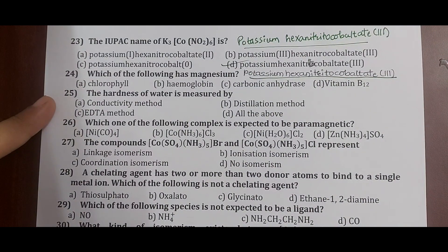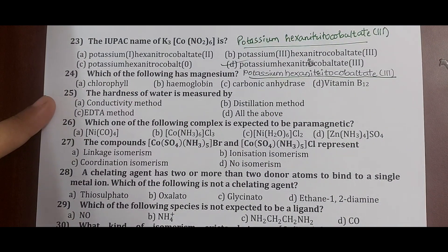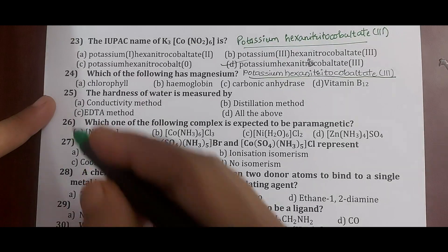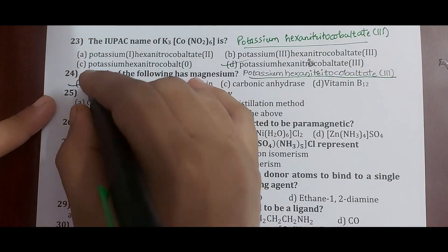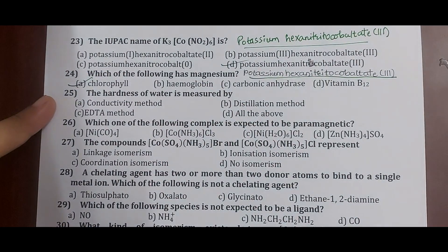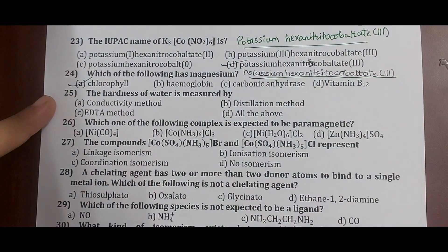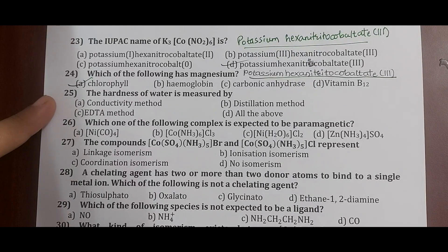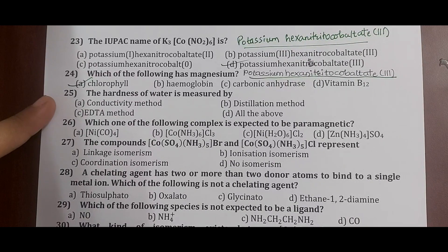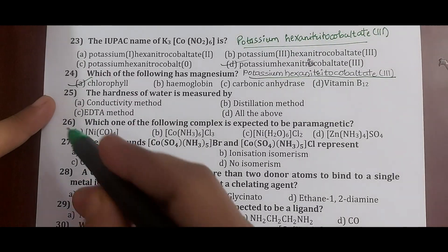Question 24: which contains magnesium? Magnesium is present in chlorophyll. In hemoglobin we have iron; in carbonic anhydrase we have zinc; in vitamin B12 we have cobalt.